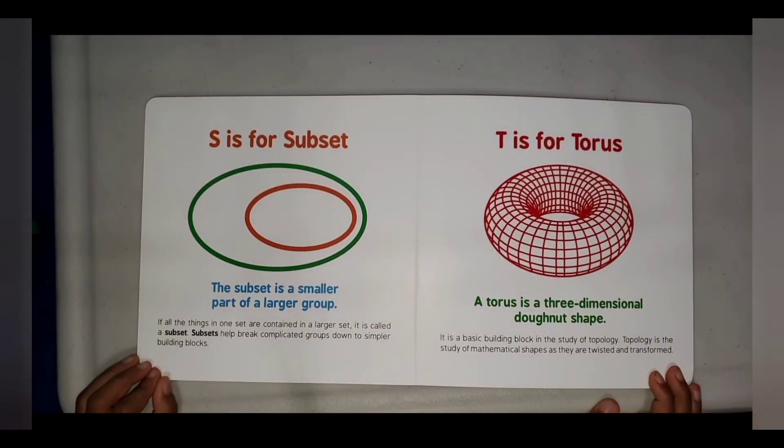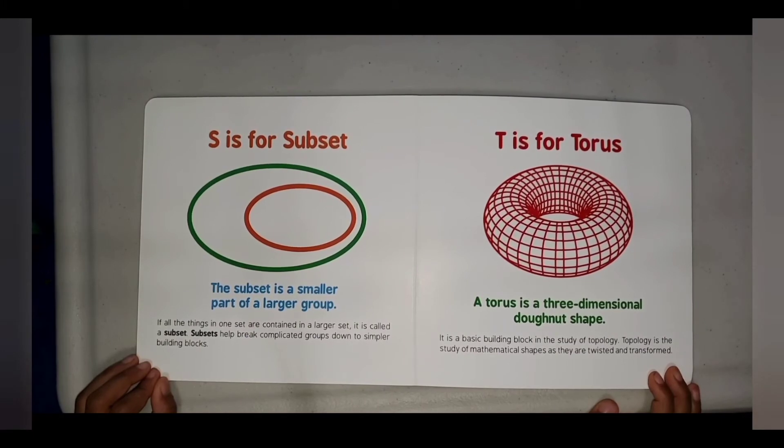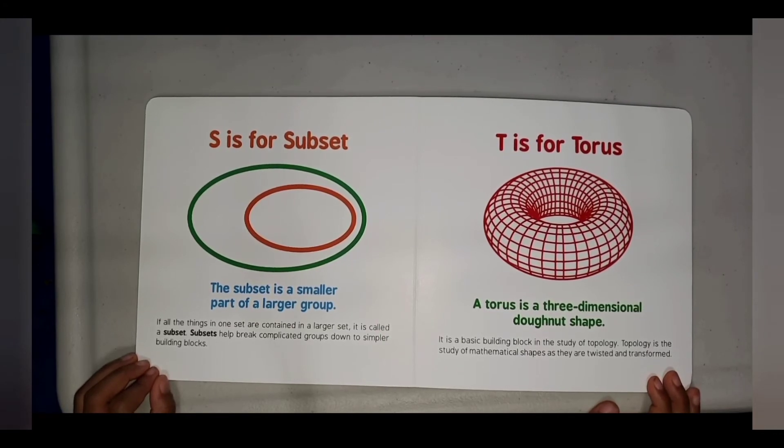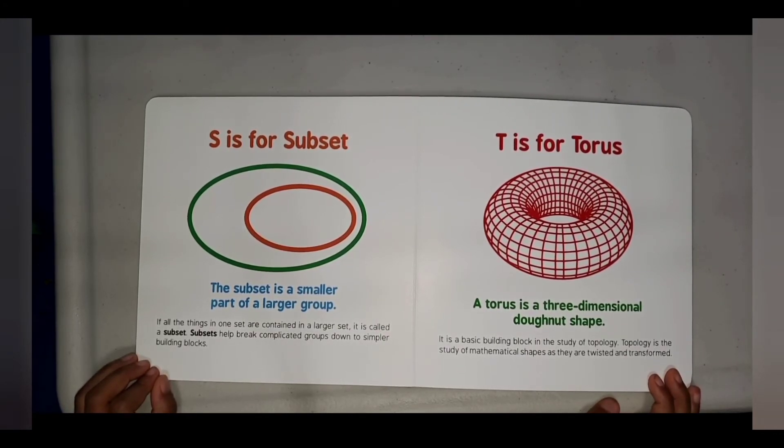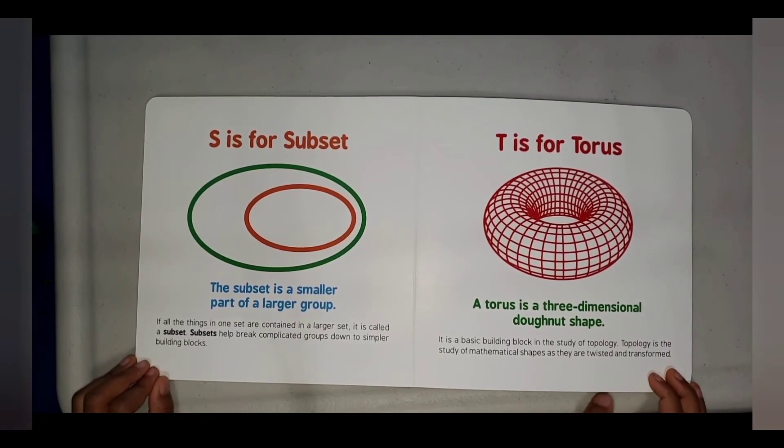T is for Torus. A torus is a three-dimensional donut shape. Topology is the study of mathematical shapes as they are twisted and transformed.